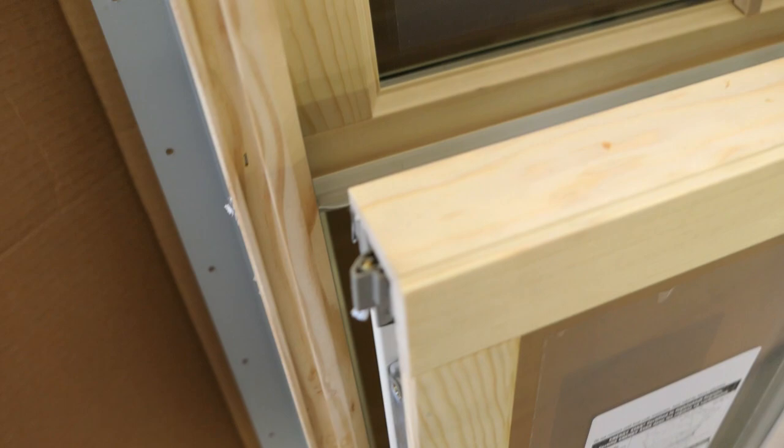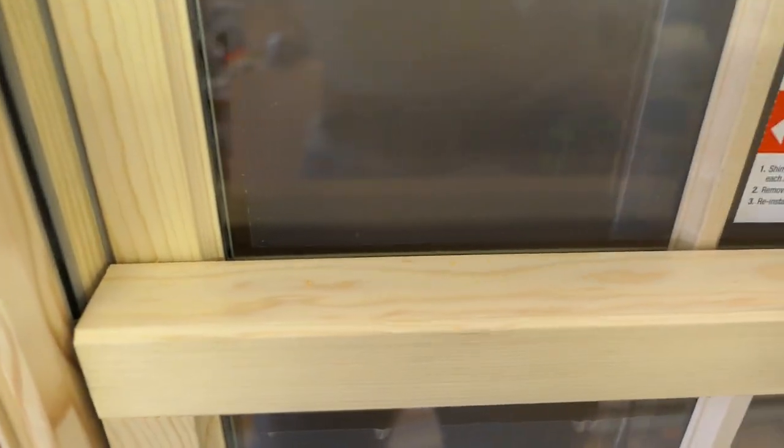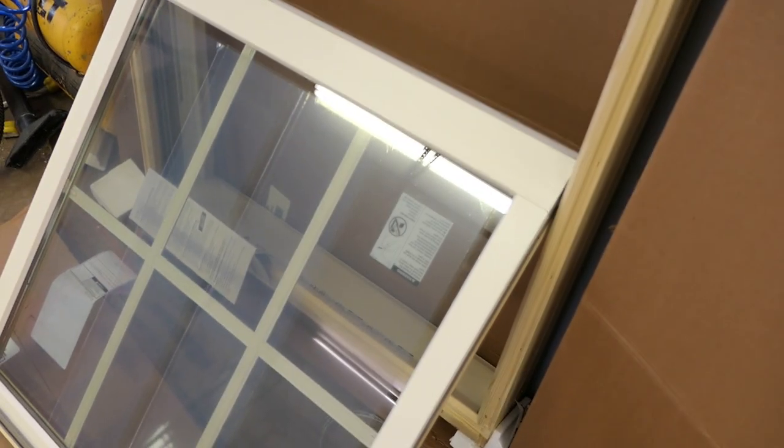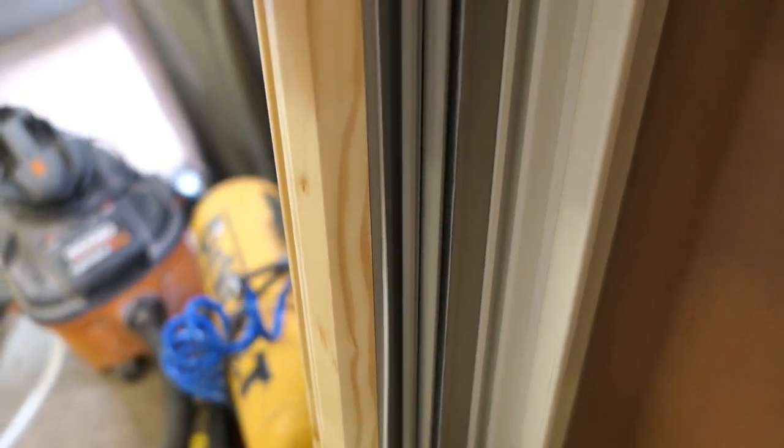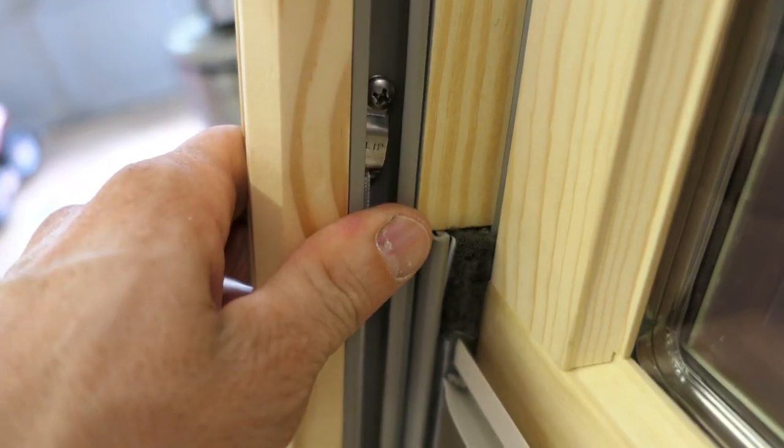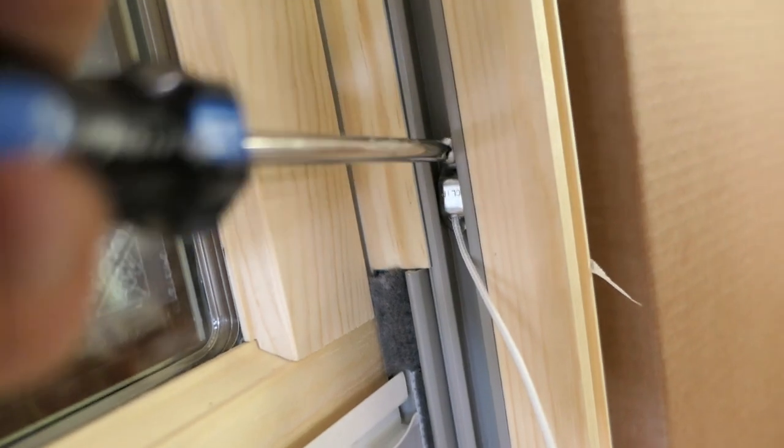There's these little spring-loaded ears here on the end. By moving that lock I'm releasing those ears and it lets the window tilt in. It's actually a much better system. I like it a lot better than the old system. After releasing that lock you can tilt the window all the way in so the outside is now inside.